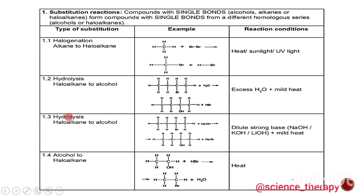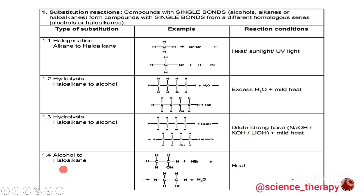We have another hydrolysis, but this time instead of reacting with water we are reacting with sodium hydroxide. The same thing happens — we substitute the bromine with the hydroxyl group OH. The bromine this time reacts with the sodium to give us the byproduct sodium bromide. The reaction conditions are dilute strong base — sodium hydroxide, potassium hydroxide, or lithium hydroxide — and mild heat.